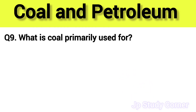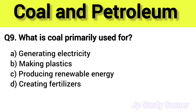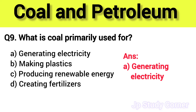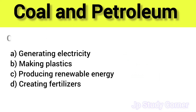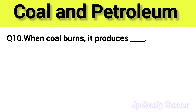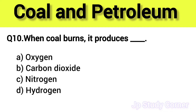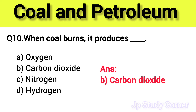Question number nine: what is coal primarily used for? The right answer is option A — generating electricity. Question number ten: when coal burns it produces dash. The right answer is option B — carbon dioxide.